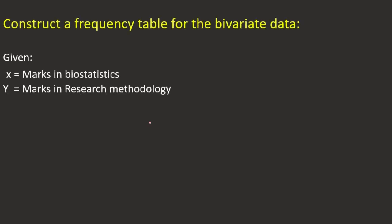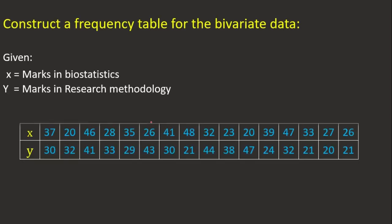Now we move on to constructing a frequency table for bivariate data. Here, X denotes marks in Biostatistics and Y denotes marks in Research Methodology. These are the marks given by students, and we are going to construct a bivariate frequency table.